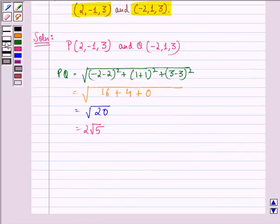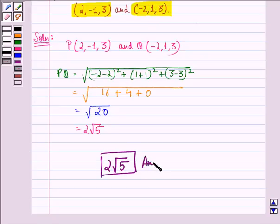So our answer to the question is 2 root 5 is the distance between these two given points. So this is our answer to the question. I hope that you understood the question and enjoyed the session. Have a good day.